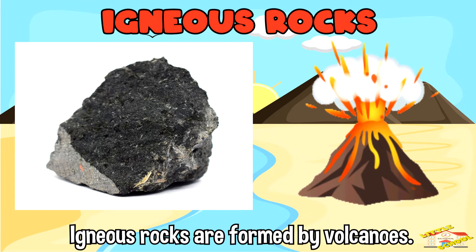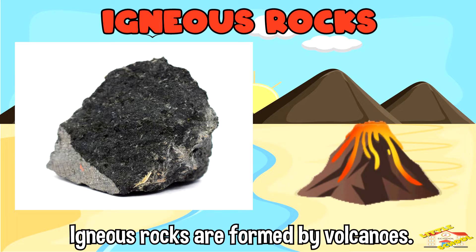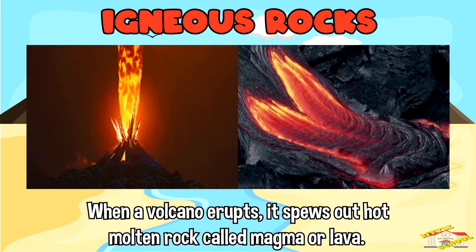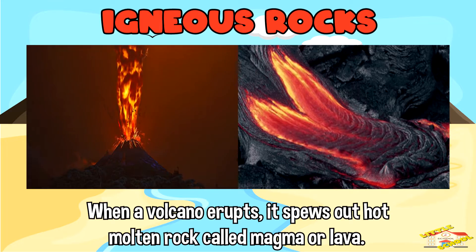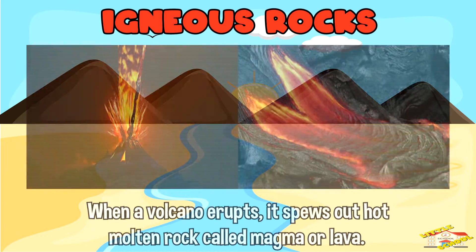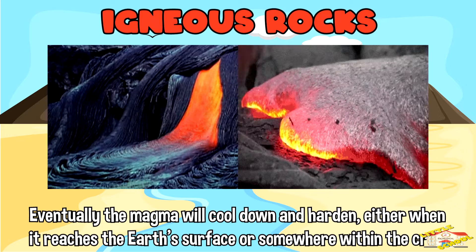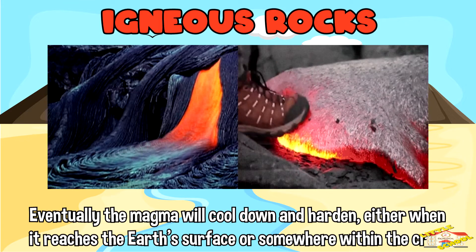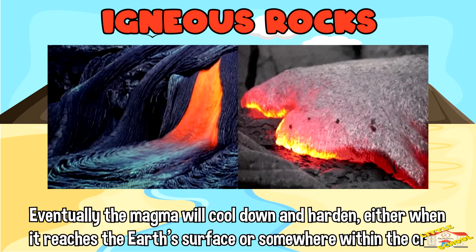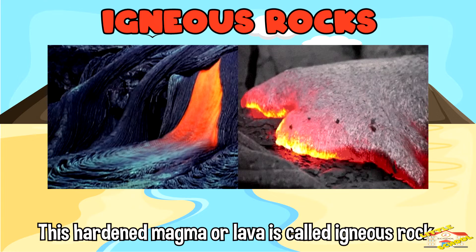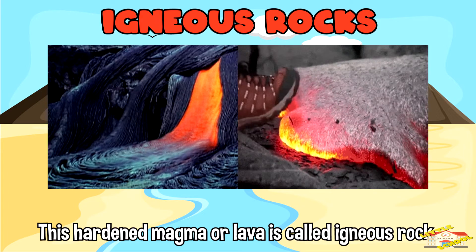Igneous rocks are formed by volcanoes. When a volcano erupts, it spews out hot molten rock called magma or lava. Eventually the magma will cool down and harden, either when it reaches the earth's surface or somewhere within the crust. This hardened magma or lava is called igneous rock.